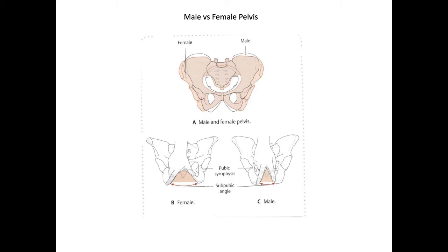As we can see in the lower part of this picture, a female pelvis will have a wider subpubic angle, somewhere around 90 to 100 degrees, whereas a male pelvis will have a narrower subpubic angle, somewhere around 70 degrees.